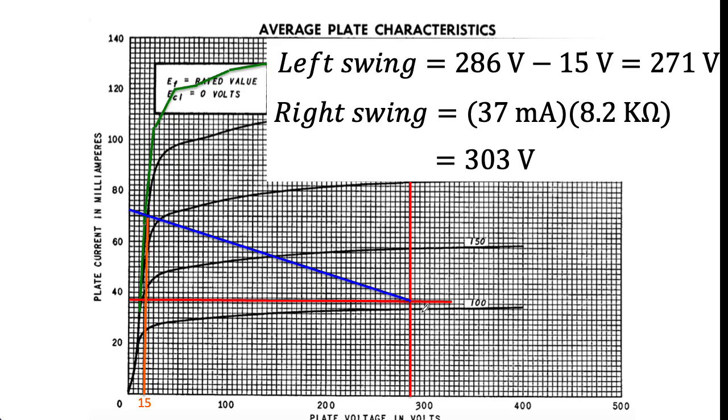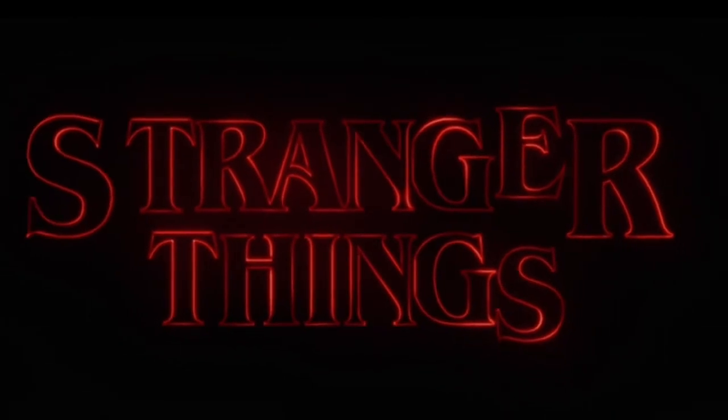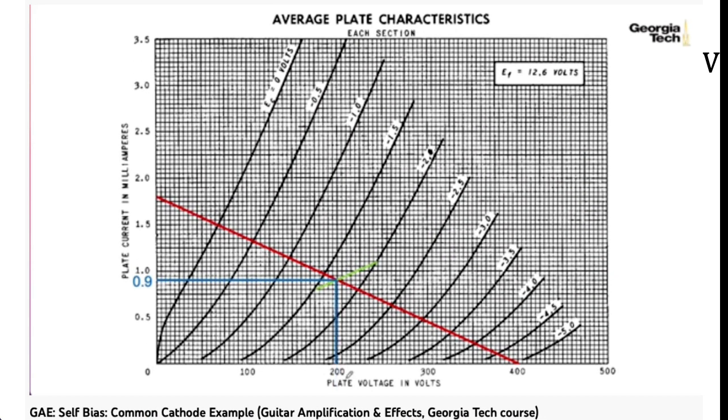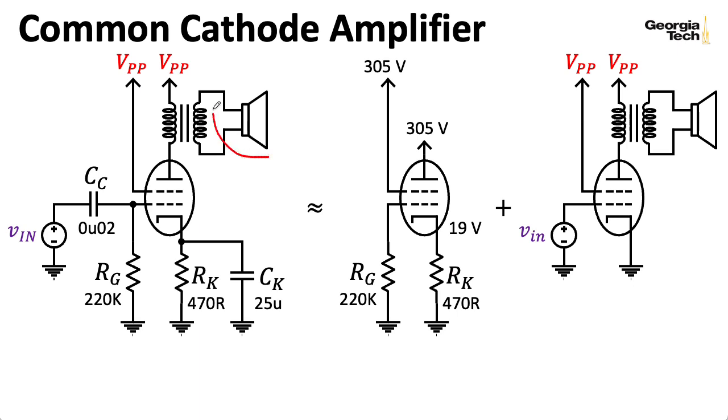Now, before we close out, I want to address that little voice in the back of your head that was telling you that there's something strange going on the moment I presented this plot. We put the bias point here at 286 volts, and we said that we could swing 271 volts to the left. Well, then we could also swing 271 volts to the right, and if I were to draw that line going this direction, wait a minute, the power supply was 306 volts. I'm claiming we can get plate voltages that are higher than the power supply. How can that be? That's certainly not something we saw with the resistive loads that we had with the common cathode preamplifier stages we've looked at previously.